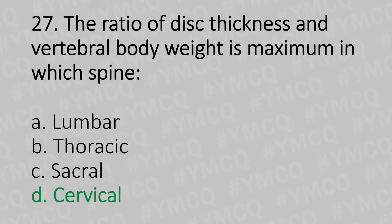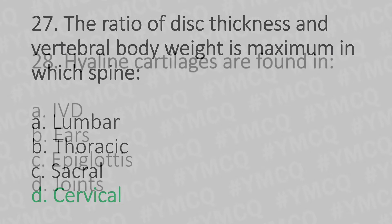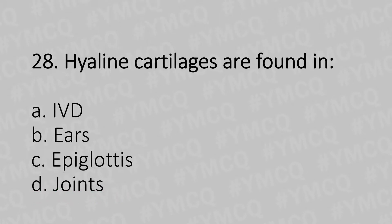Moving to our 28th question. Where are hyaline ring cartilages found? Option A: IVD (Intervertebral disc). Option B: Airways. Option C: Epiglottis. Option D: Joints. And the answer is Option D: Joints.